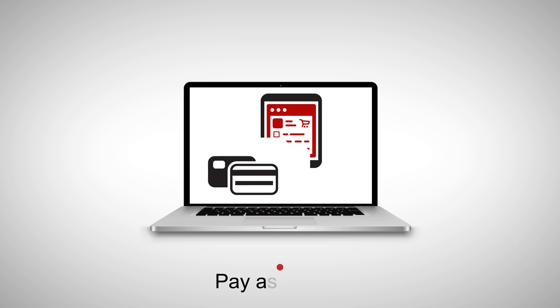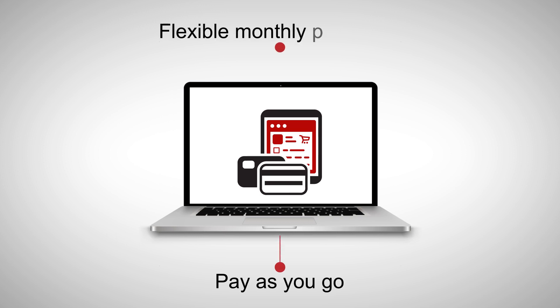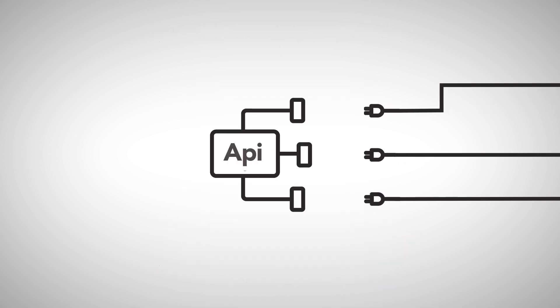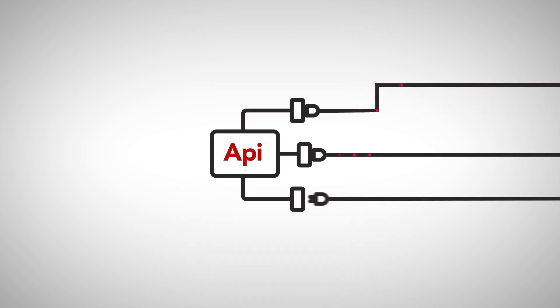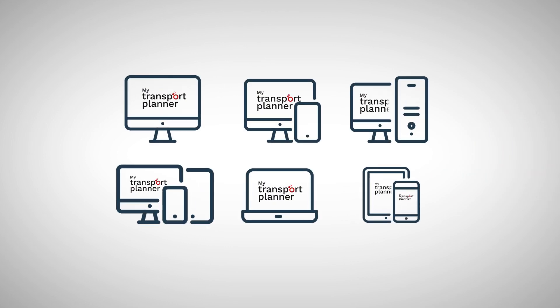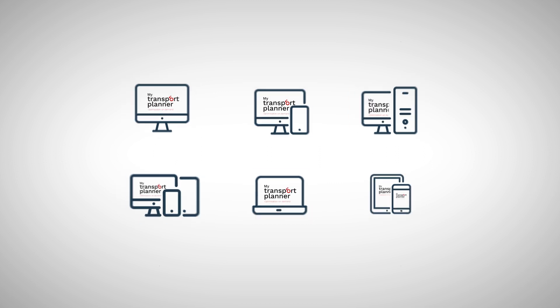You can choose between pay-as-you-go or flexible monthly payment options for My Transport Planner and My Transport Planner Pro. We also offer an API-only version which allows you to embed or integrate our optimization engine within your existing systems, so you can truly tailor a package to suit both your budget and functionality requirements.